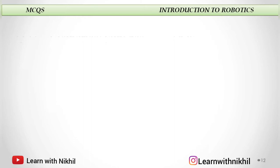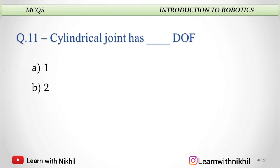Next: Cylindrical joint has dash DOF — one, two, three, or four? In a cylindrical joint, you have two degrees of freedom.